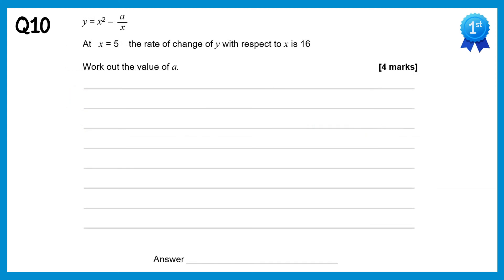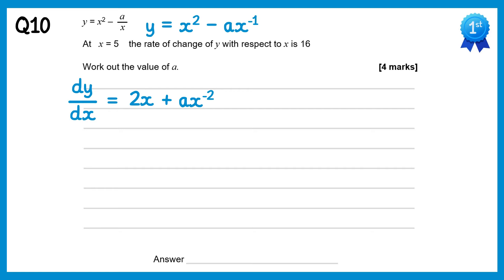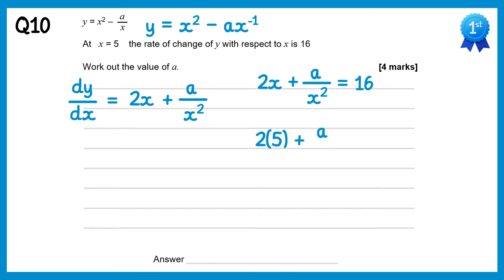For this question we'll rewrite a over x as ax to the power negative 1. Then dy/dx: x squared differentiates to give 2x, and negative 1 times negative a gives positive a, reducing the power to x to the negative 2, written as a over x squared. Setting equal to 16 at x equals 5: 2 lots of 5 plus a over 5 squared equals 16. That's 10 plus a over 25 equals 16. Taking away 10 gives a over 25 equals 6, and multiplying both sides by 25 gives a equals 150.